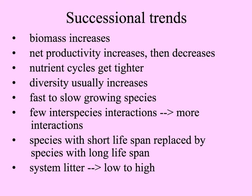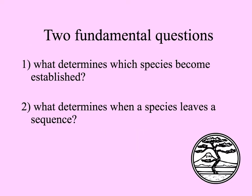During succession — both primary and secondary, though it happens more quickly with secondary — biomass increases, productivity increases and then finally decreases again in the climax. Nutrient cycles get tighter, and usually diversity of plants increases. Changes go from quick-growing plants to slower-growing species. There are very few inter-species interactions early in succession in a very open habitat, and more interactions later — competition as well as plant-animal interactions. Short-lived species are replaced by longer-lived species. And litter fall — leaves falling off, branches, etc. — increases with succession.